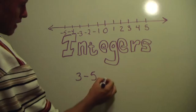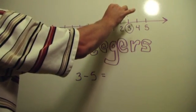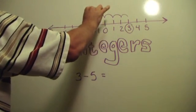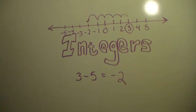This is an example of an integer problem or equation. Three minus five. Start at three, take away five. Always to the left when we take away. End up at negative two. Three minus five equals negative two.